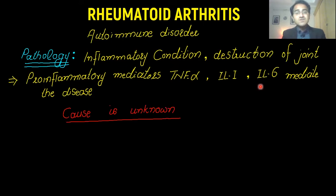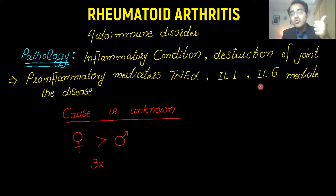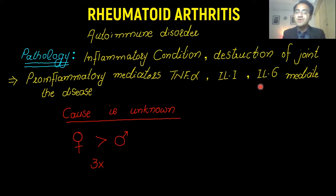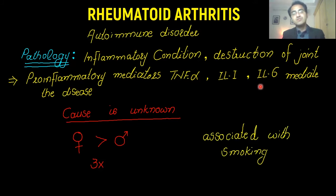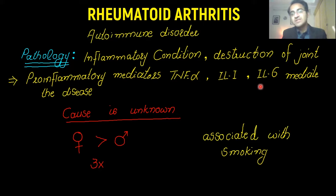The cause of rheumatoid arthritis is unknown. But there is an association with certain things: it is more commonly found in females — three times more common in females compared to males. It is also associated with smoking and with certain infections like mycoplasma and other atypical bacteria.